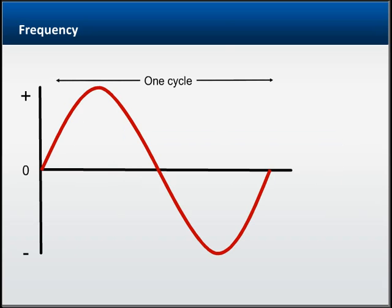A single cycle is the AC electric waveform going from zero voltage to the maximum positive voltage value, passing back through zero to the maximum negative voltage value, and then back to zero.